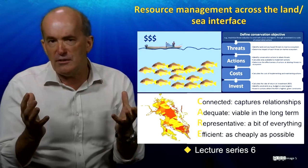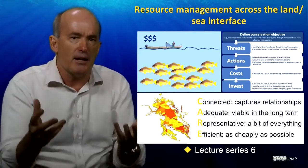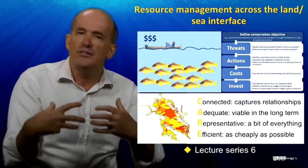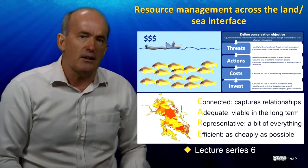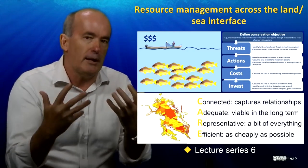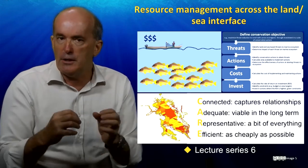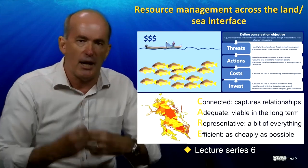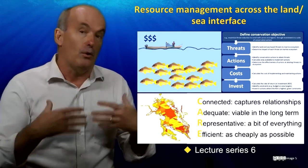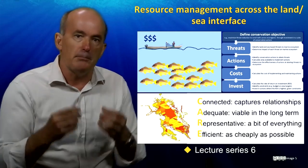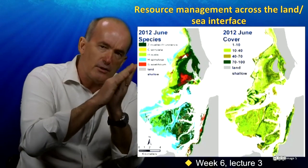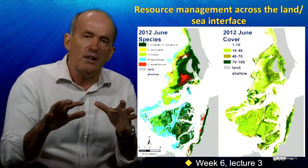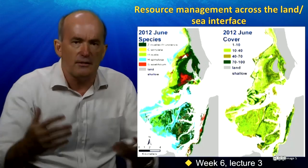We studied solutions to the problems: fisheries management, how land-based activities can be modified to protect marine resources, and we learned the principles of designing effective networks of marine protected areas. We also looked at how systematic conservation planning can be used to provide people with the best overall solutions to these complex resource management challenges. We also saw how climate change impacts might be mitigated, and how state-of-the-art scientific tools can be applied to the study of tropical coastal ecosystems, including complex computer models and remotely sensed imagery.